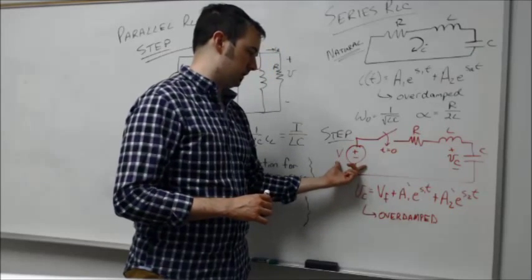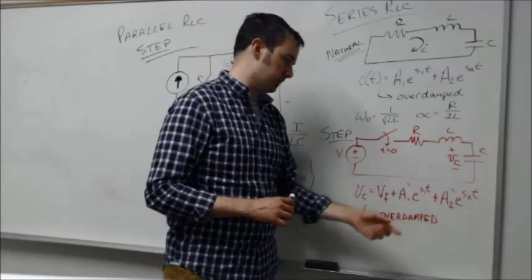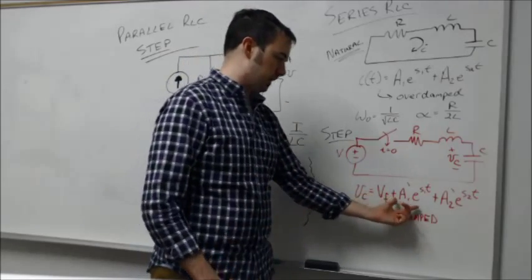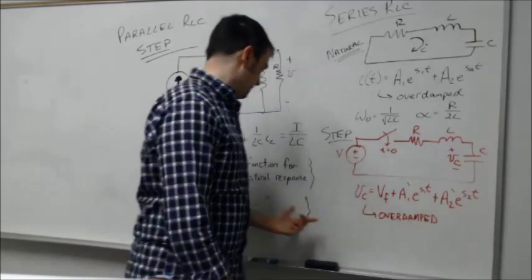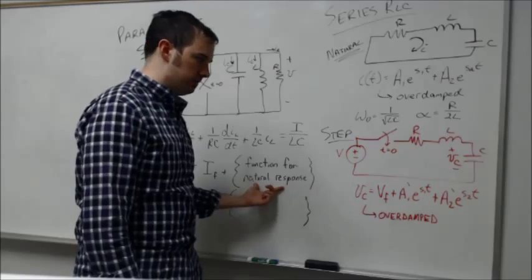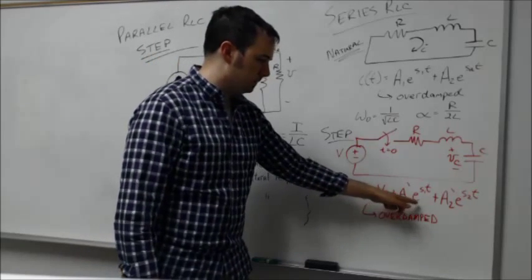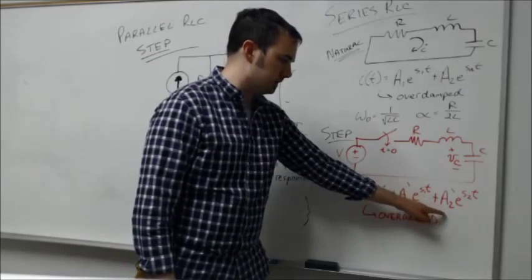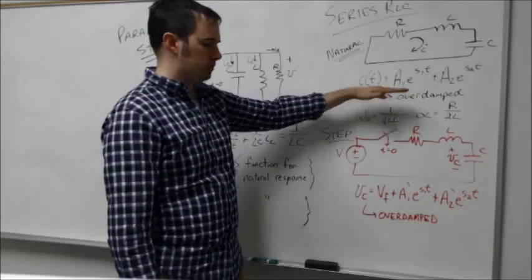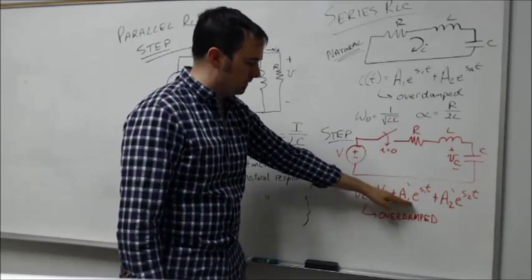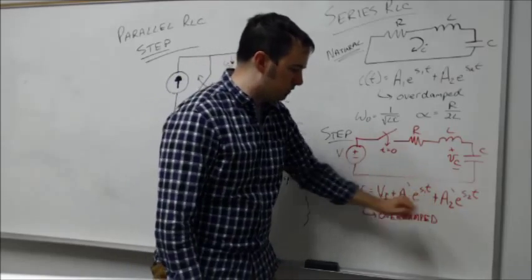Plus the same form of the natural response: a1 times exponential s1t plus a2 times exponential s2t. It's the very same form as what's shown here. The only difference though is that this a1 and a2 terms are not the exact same a1 and a2 that I would get from the natural response case.